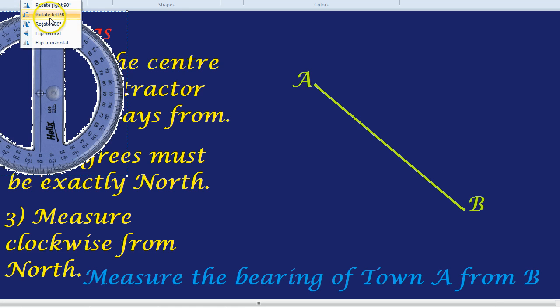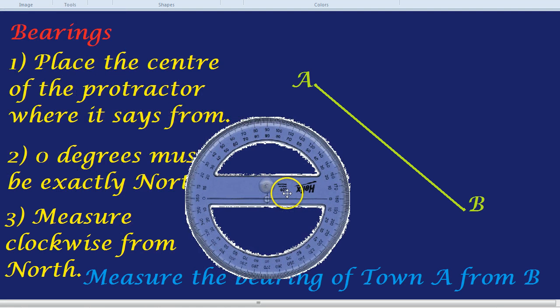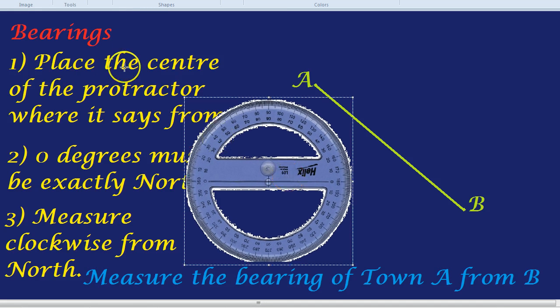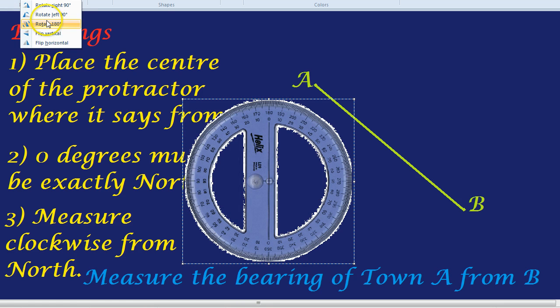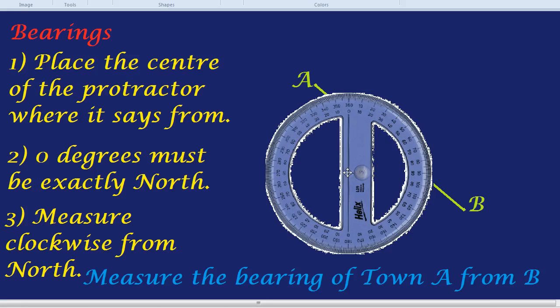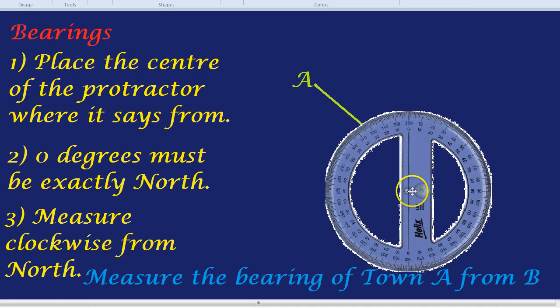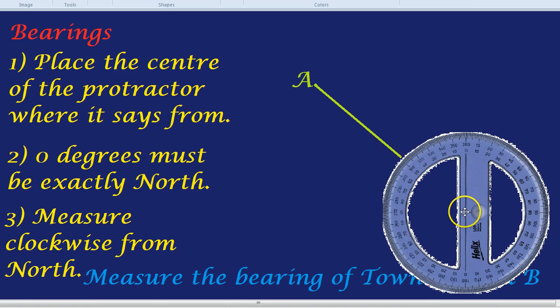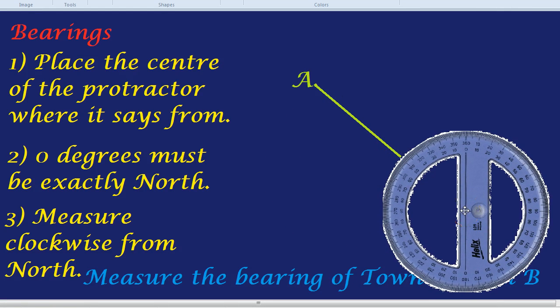Just to illustrate, if my protractor was like this, where zero degrees is not north, I'd have to spin it carefully until zero degrees was absolutely at north. Now, I place the centre of my protractor where it says from. In this question, it said from B. So, the centre of my protractor, using my finger, is going to be exactly at town B. There we are.